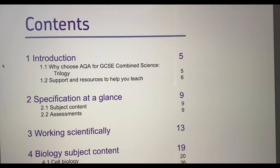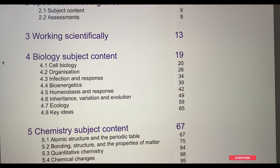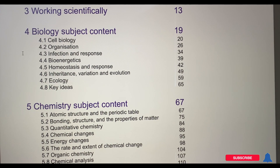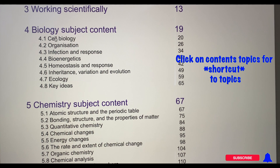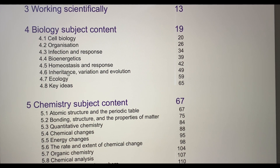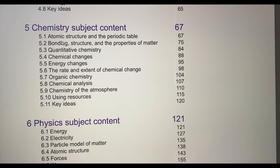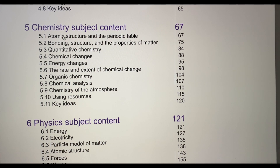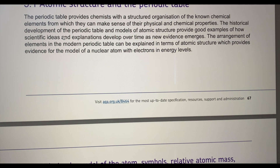Going back to the contents page, the second very important thing for students is the actual subject content. If you click on any of the topics listed, it acts as a shortcut and takes you directly to the pages covering that topic. So if I needed to revise inheritance and variation for paper 2, I would click it and go straight there. If I wanted to revise atomic structure and the periodic table for chemistry, I click it and it takes me straight to that topic — in this case, page 67.